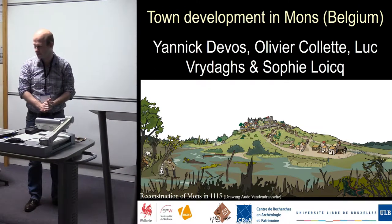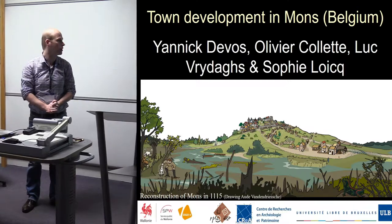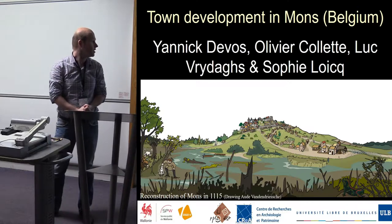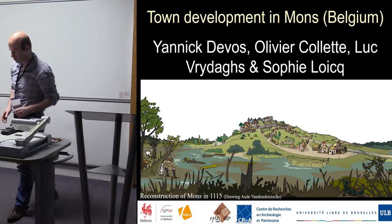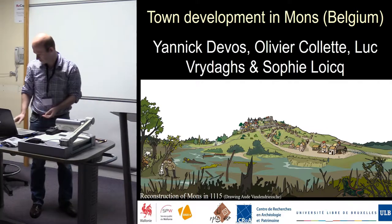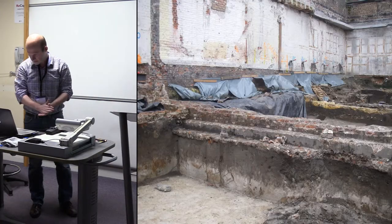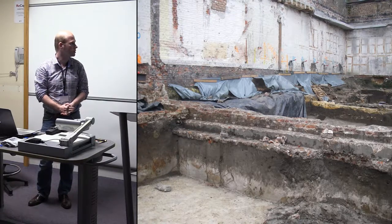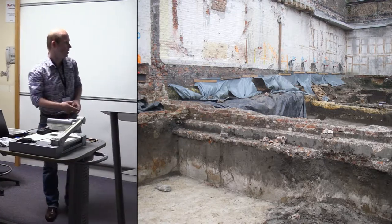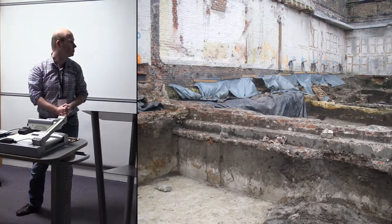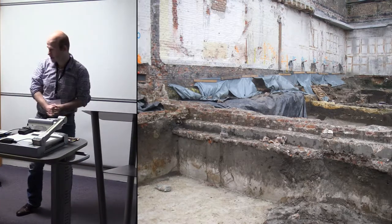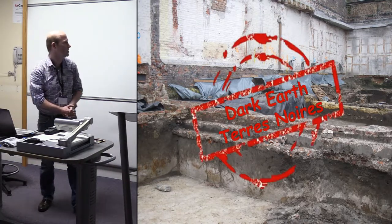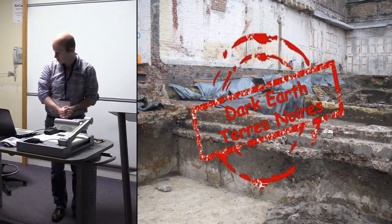I suppose that many of you will not be surprised that we'll be talking about Dark Earth, but this time not from Brussels nor from Flanders, but we will go a bit south to the town of Mons. During the excavations in 2013-2014, the archaeologists found this thick, dark-colored, homogeneous eumic layer called the whole area of the site, which we now know as the Dark Earth, or the French-speaking Terre Noir.